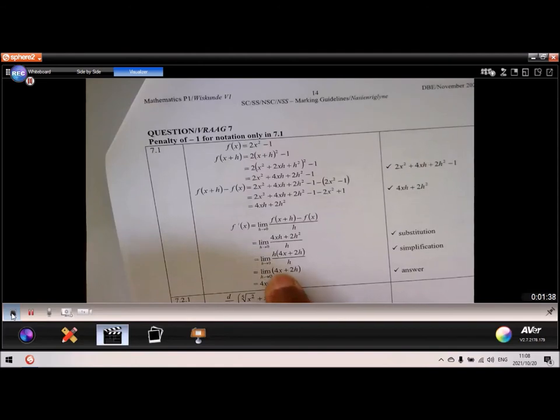Then cancel the h's. The limit of 4x is 4x. Remember x is regarded as a constant. So the limit of a constant is the constant. And the limit of 2h is 0.